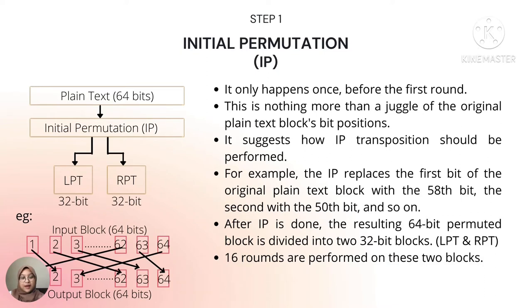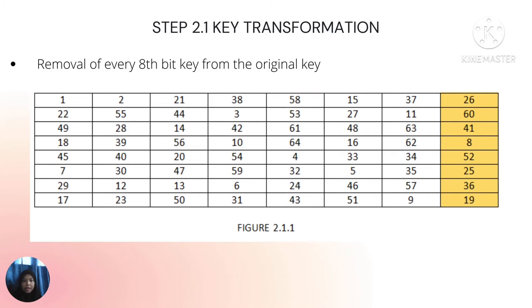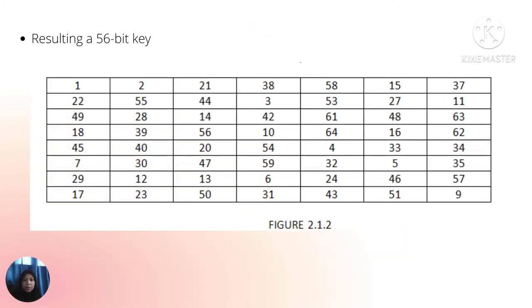In the key transformation stage, we first begin with the removal of every eighth bit of the original key. The original key used is actually a 64-bit key, as you can see in figure 2.1.1. Since we remove every eighth bit of the original key, this produces a new 56-bit key, as you can see in figure 2.1.2.